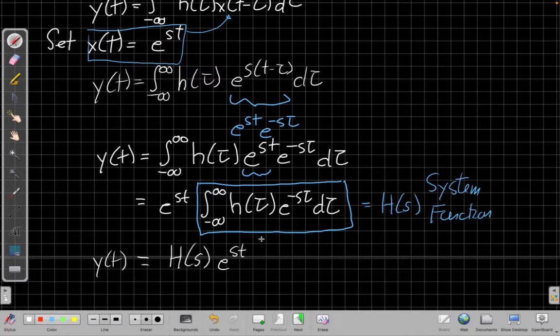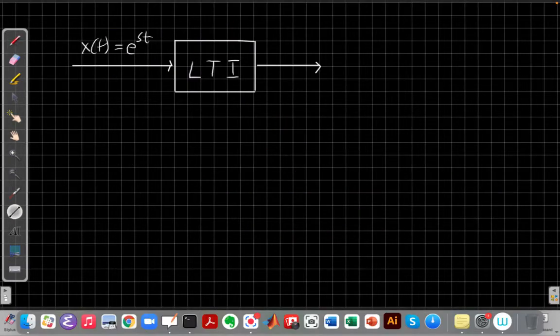And so we can also express this graphically. Some people find it easier that way. What we've just shown mathematically is that if I have a linear time invariant system where the input x(t) is e to the st,